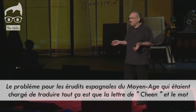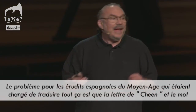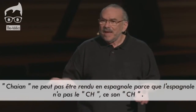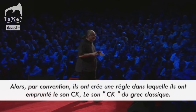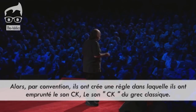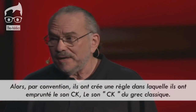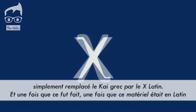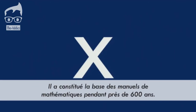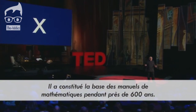The problem for the medieval Spanish scholars who were tasked with translating this material is that the letter sheen and the word sheen can't be rendered into Spanish, because Spanish doesn't have that 'sh' sound. So by convention, they created a rule in which they borrowed the 'ck' sound — the K sound — from classical Greek in the form of the letter Chi. Later, when this material was translated into a common European language — Latin — they simply replaced the Greek Chi with the Latin X. And once that happened, once this material was in Latin, it formed the basis for mathematics textbooks for almost 600 years.